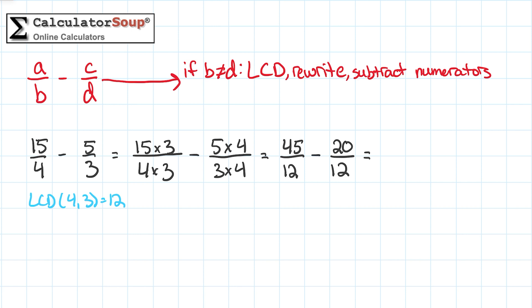45 minus 20 is 25, so our answer is 25 twelfths. Let's simplify this fraction to a mixed number.